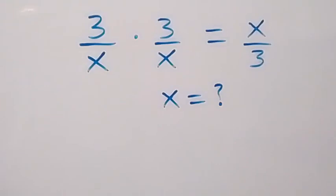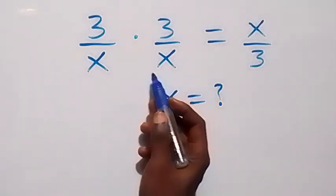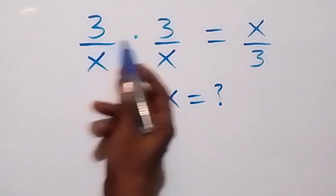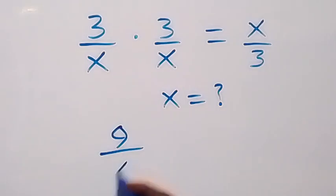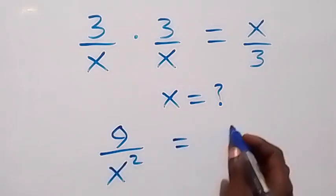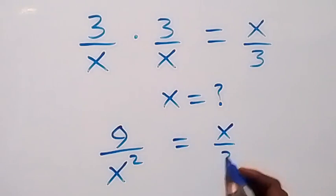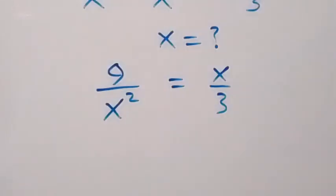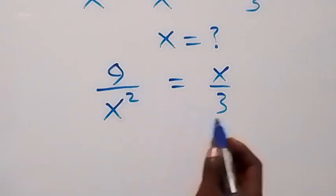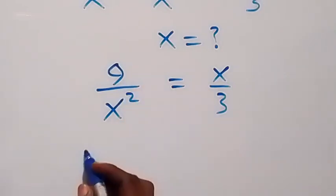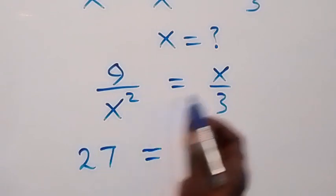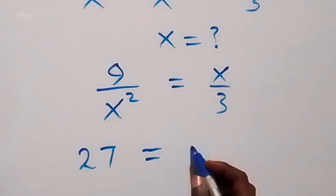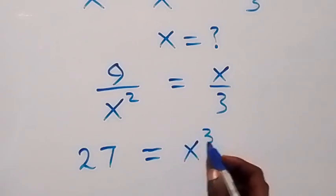Hello y'all, welcome. How to solve this nice math problem. From what is given here, we can multiply 3 times 3, that's 9. And from here x times x gives us x squared, which is equal to x over 3. Then when we cross multiply, 9 times 3 gives us 27, which equals x squared times x, and that gives us x raised to power 3.